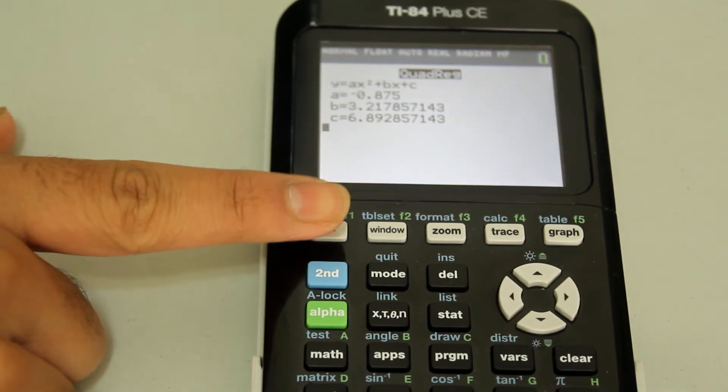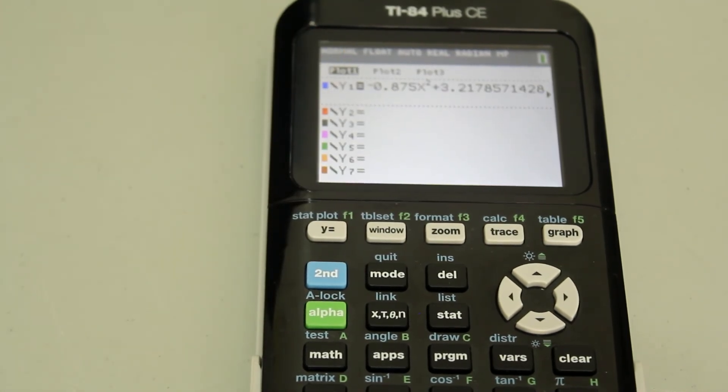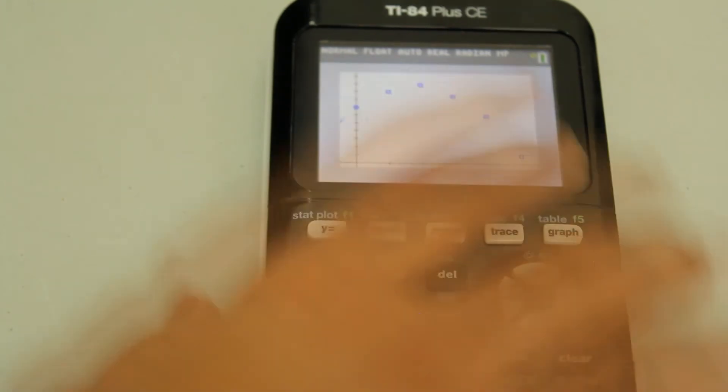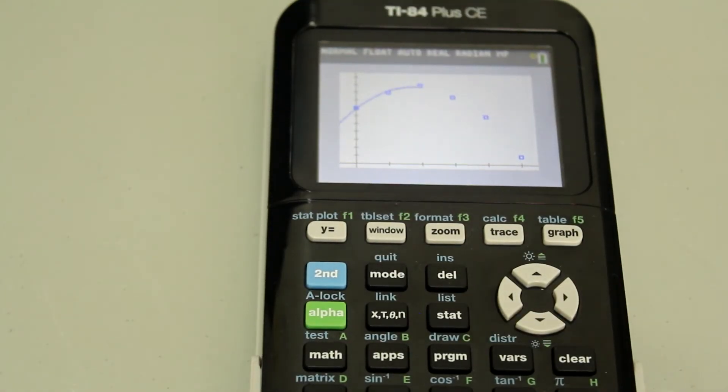And now if you go to your Y equals, you see that the regression equation was also already entered. So if you go into graph now, you see that you get the curve that goes with the quadratic regression.